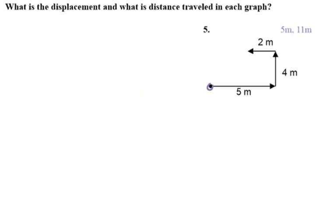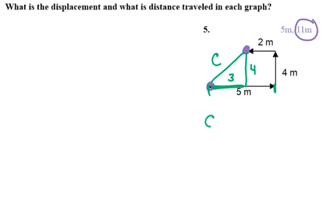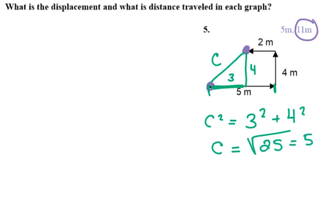Another example: an object travels 5 + 4 + 2 = 11 meters total distance. For displacement, the triangle has legs of 4 and 3 (since the full horizontal span is 5 and this part is 2, leaving 3). Using Pythagorean theorem: c = √(16 + 9) = √25 = 5 meters.